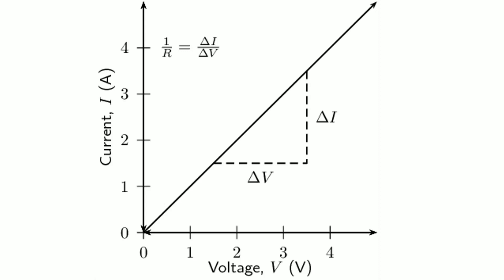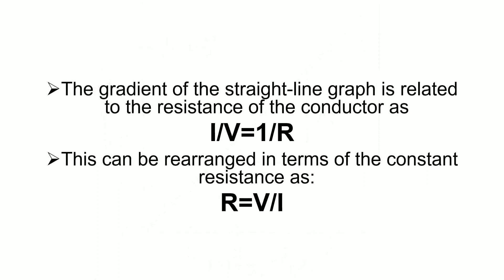The gradient of the straight line graph is related to the resistance of the conductor as I divided by V is equal to 1 divided by R. This can be rearranged in terms of the constant resistance as R is equal to V divided by I.